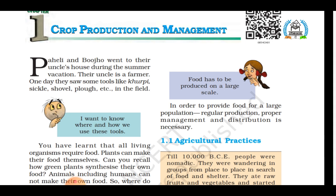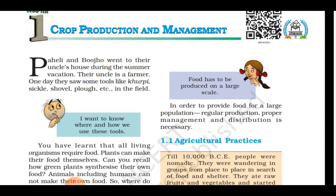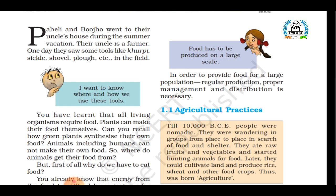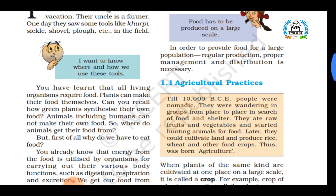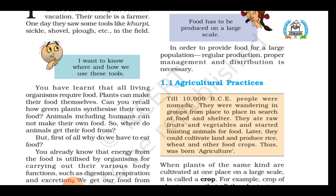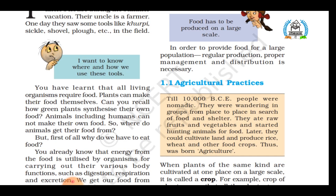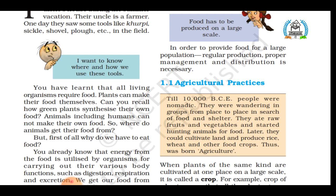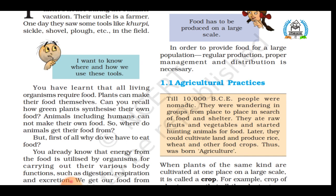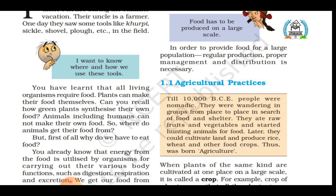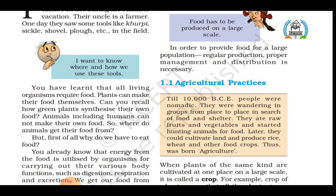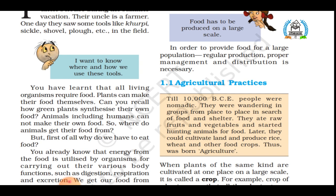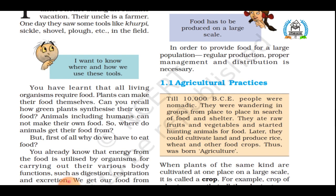Before proceeding towards the chapter, let's understand some basic terminology, because you will come across these terms throughout the chapter. The first term is agriculture. What is agriculture? Cultivating soil for growing crops and nurturing animals to provide food and other products. Agriculture is not just cultivating soil for growing crops — it also involves nurturing animals to provide food and other products.